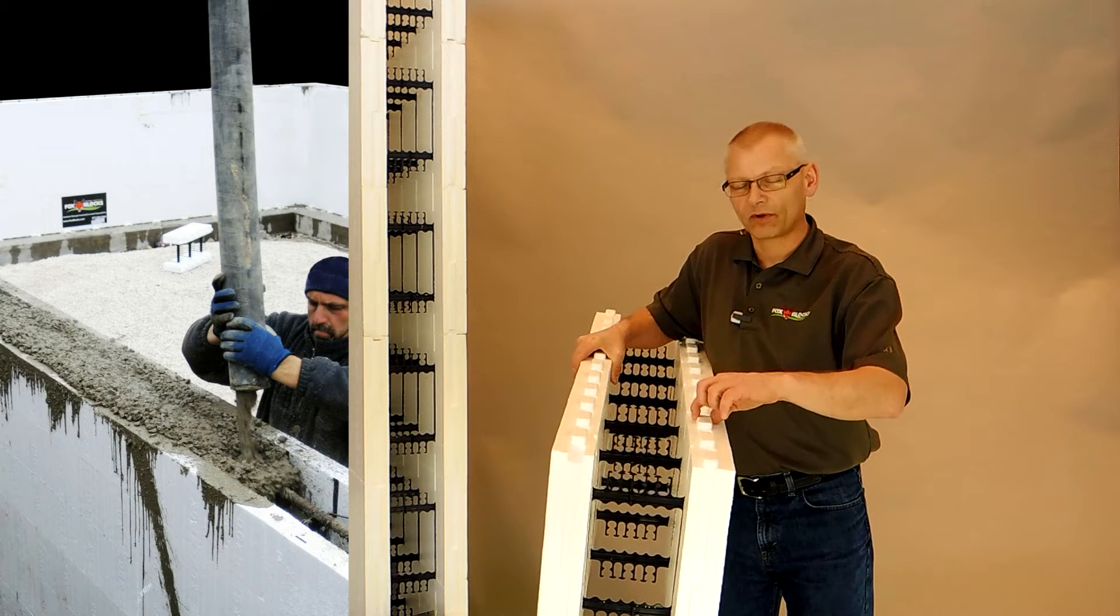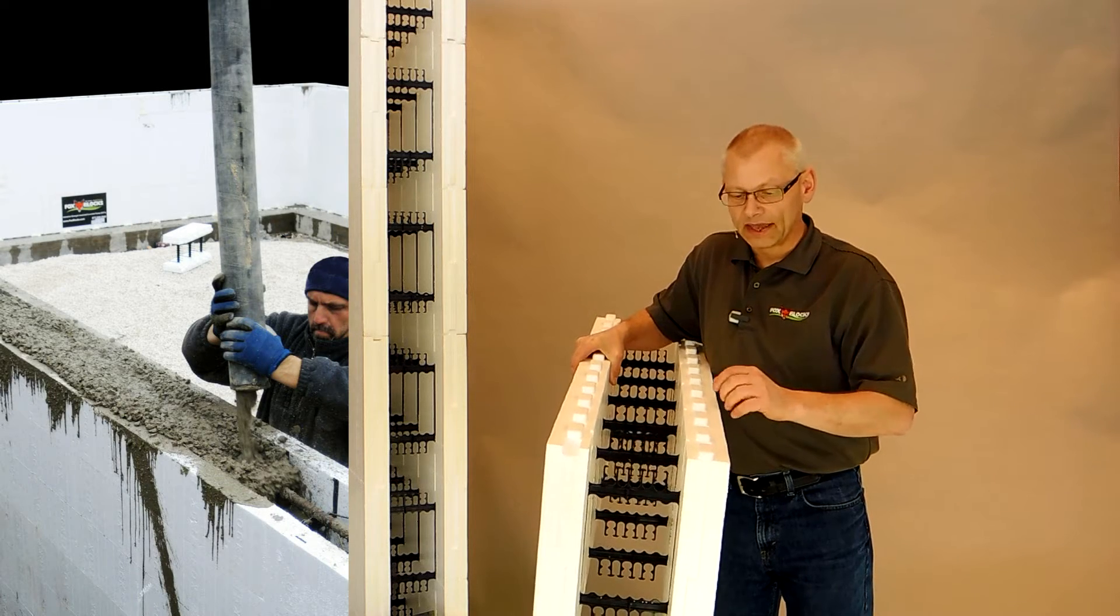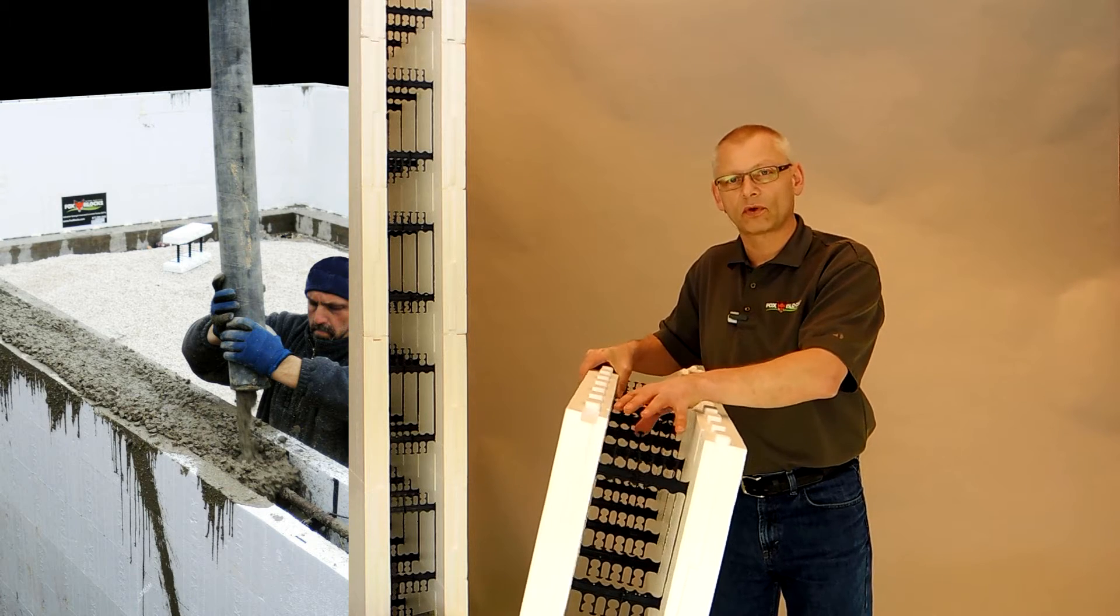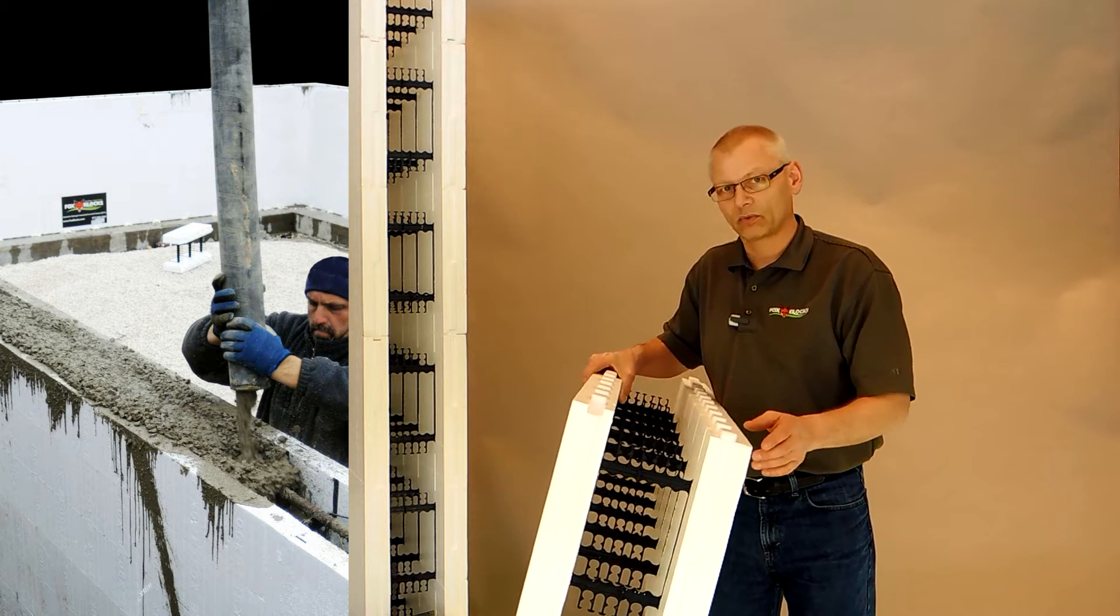You can drag it around the job site without worrying about breaking pieces off this block. It also keeps the wall straight—so straight that you don't need truss wire in the wall. We can save you four or five hundred dollars by eliminating that truss wire altogether.